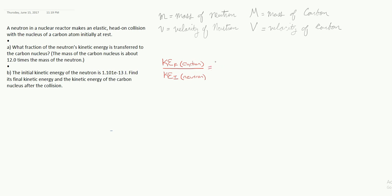So specifically, we are looking for one-half capital M capital V squared final. That's just the way I've decided to describe these variables here. Take a look at these. I'm calling capital letters carbon and little letters neutron. And so it's going to be that over one-half little m little v squared initial. What I'm going to notice is that the one-halves cancel out. And the capital M over M,